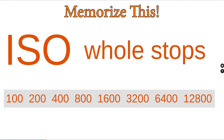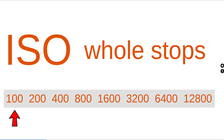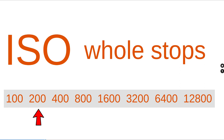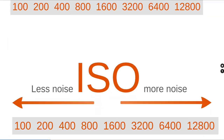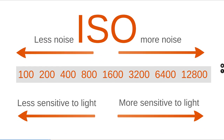ISO controls the camera's sensor sensitivity to light. The standard ISO scale runs from 100 to 12,800 in whole stops. Notice the numbers either double when moving up a stop and halve when moving down a stop — so from 100 to 200 is a movement of one stop. The term 'stop' can be used for ISO, shutter speed, and f-stop movements. The lower the ISO number, the less sensitive to light; the higher the number, the more sensitive to light.